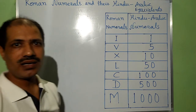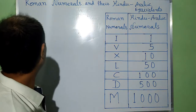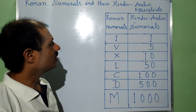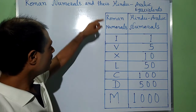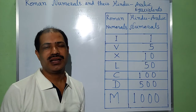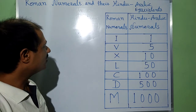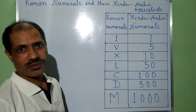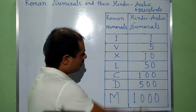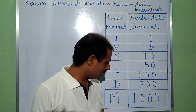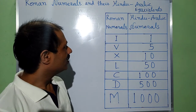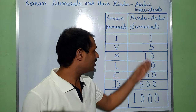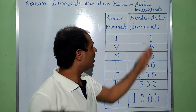Namaste everyone. I am going to explain about Roman numerals and their Hindu-Arabic equivalents. Roman numerals originated in ancient Rome, and from there these numerals were introduced throughout Europe. Hindu-Arabic numerals were originated by Hindus and introduced by Arabians to the West, which is why these numerals are called Hindu-Arabic numerals.